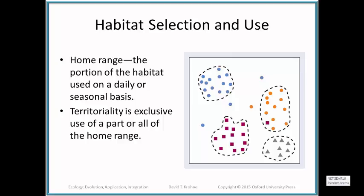Some organisms — not all — will establish territories, which are a small part, or in some cases the whole home range, that they actively defend and repel other individuals from, so they have exclusive use of that part of the habitat. That's called a territory, and the behavior is territorial defense.